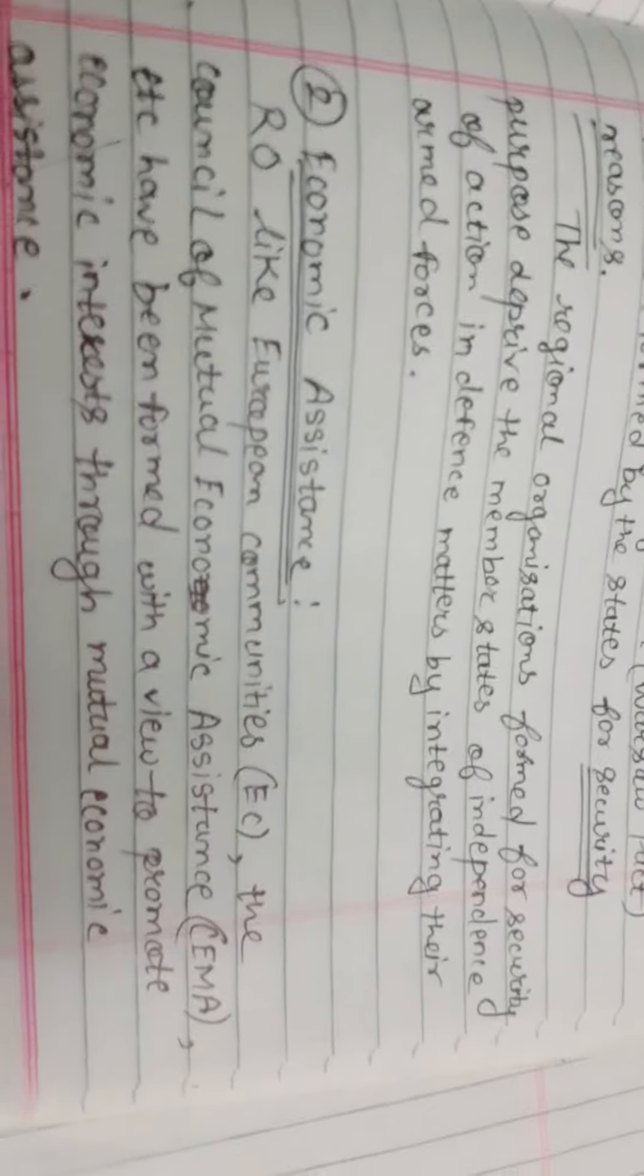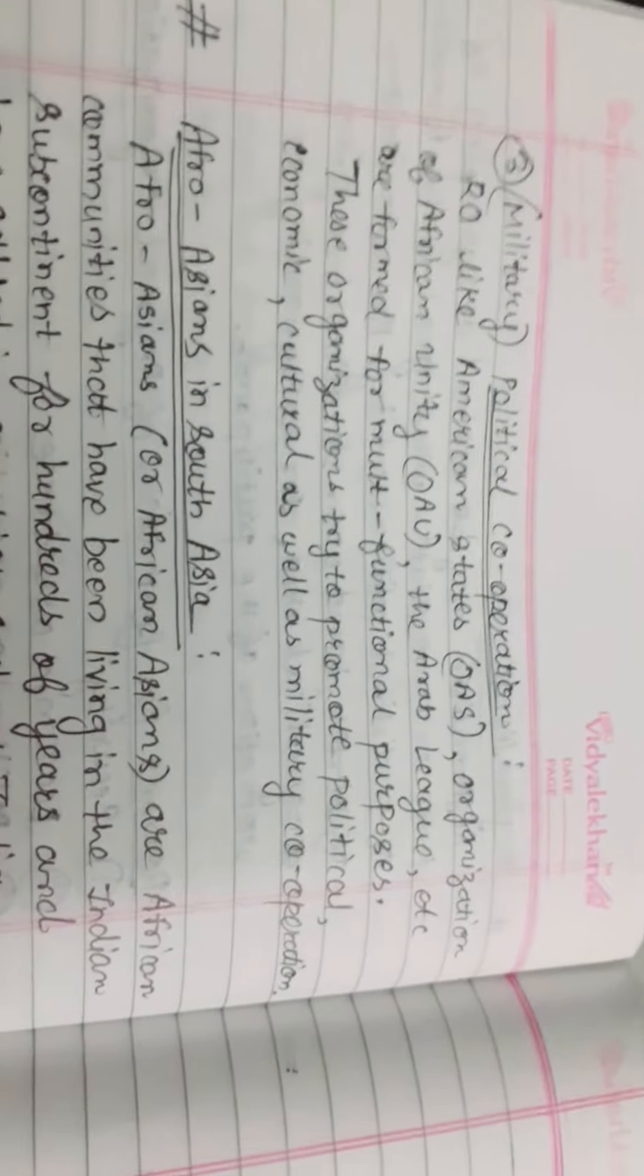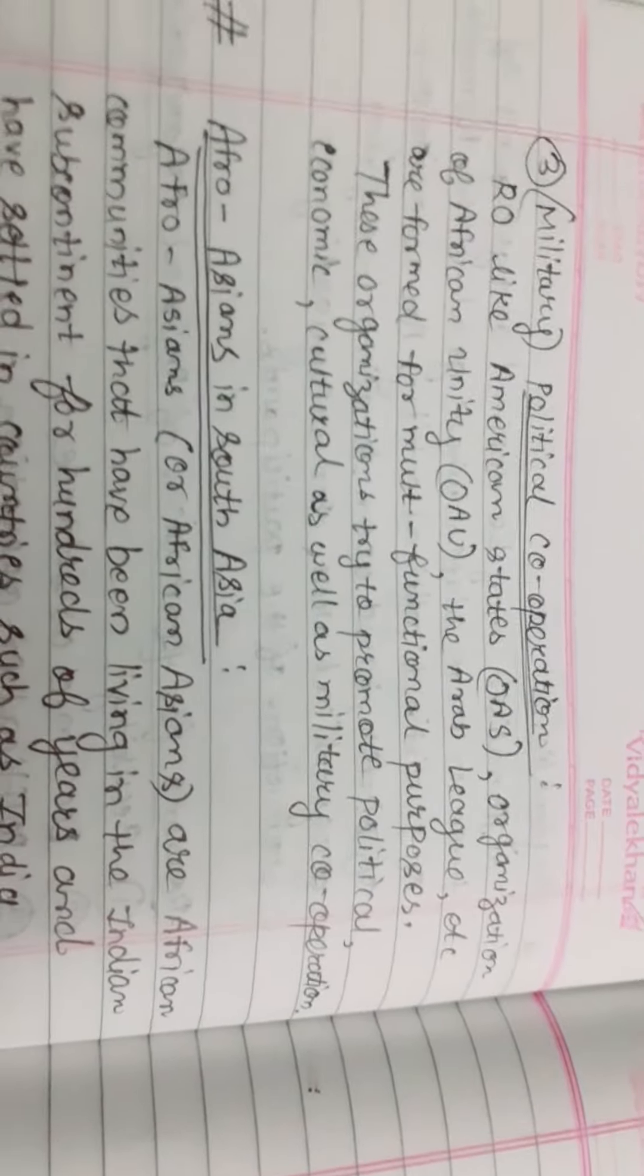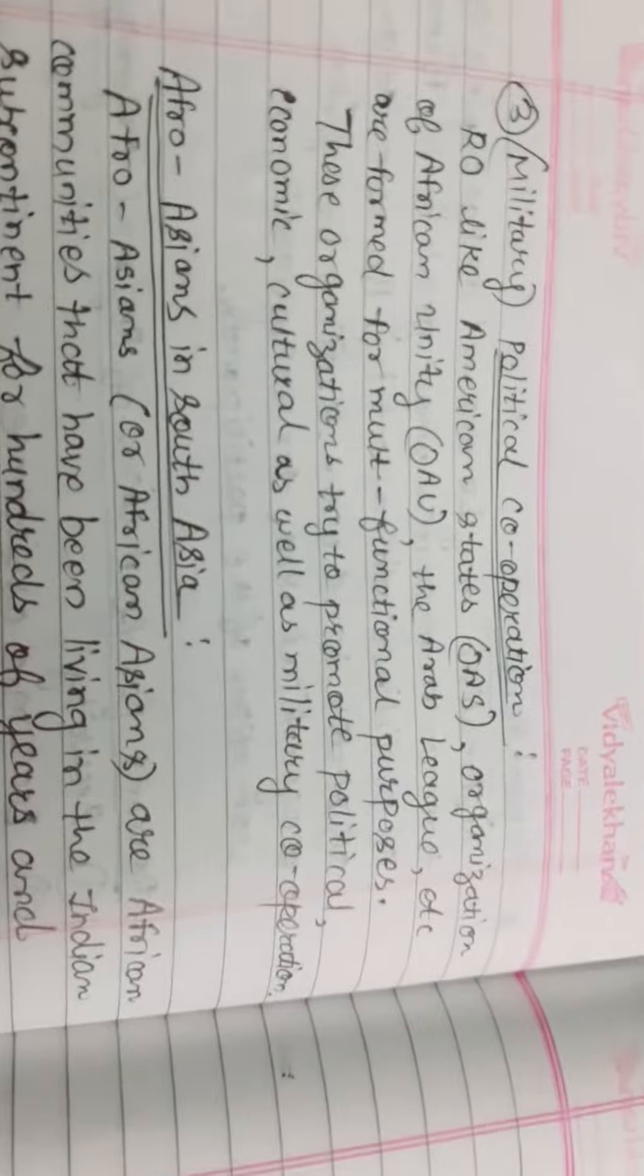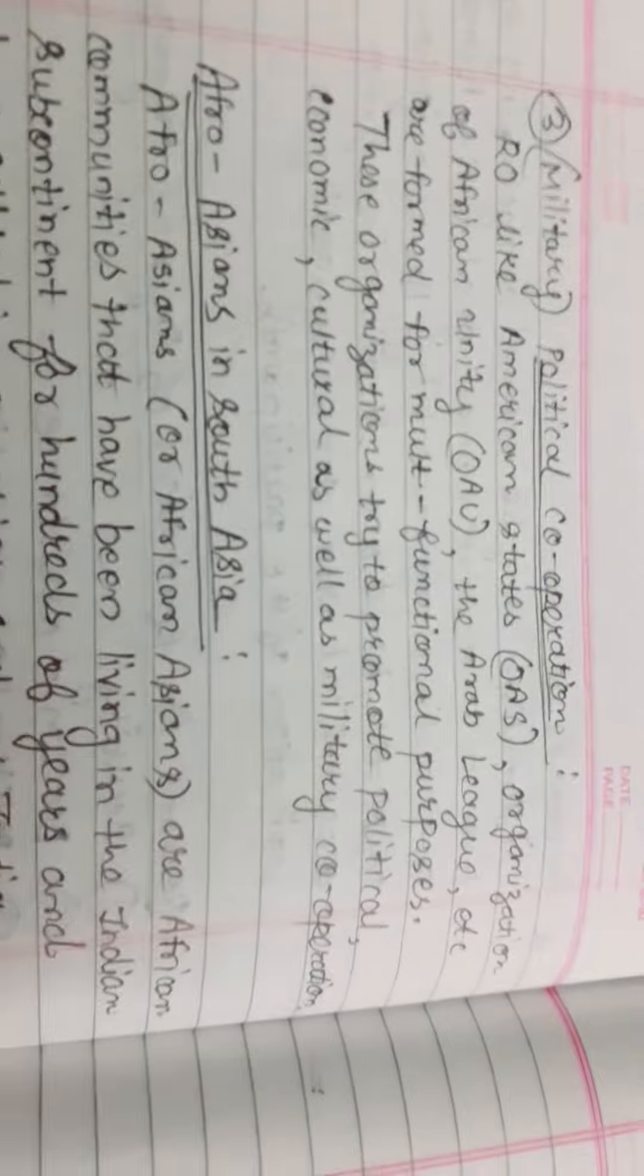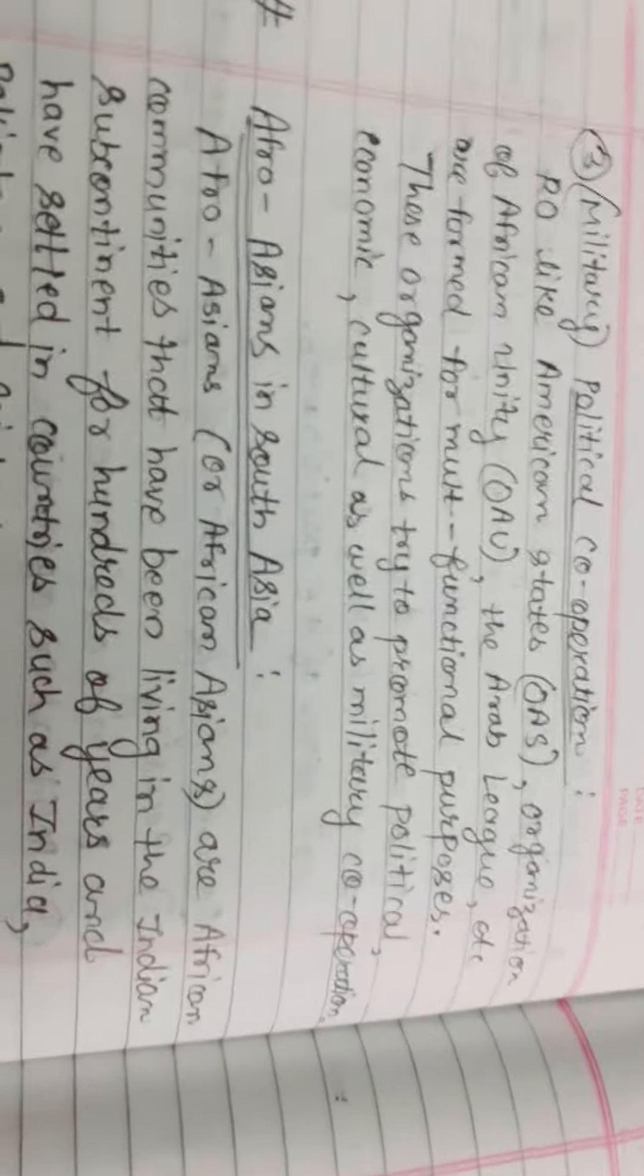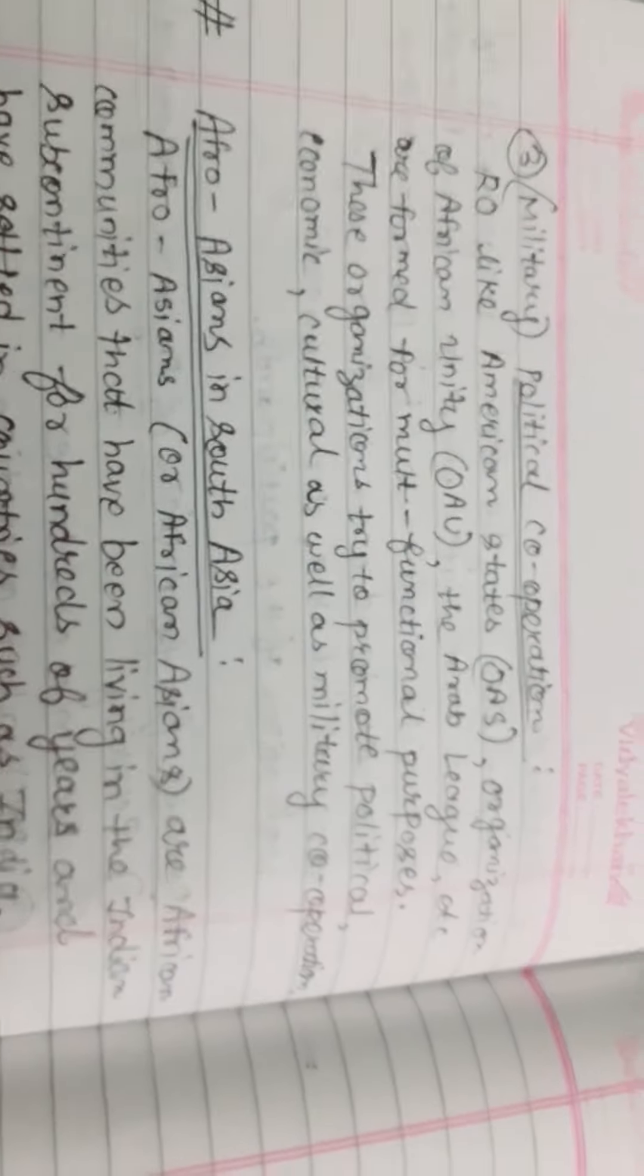For political cooperation, regional organizations like OAS, Organization of African Unity, and the Arab League are formed for mutual functional purposes. These organizations try to promote political, economic, cultural, as well as military cooperation.